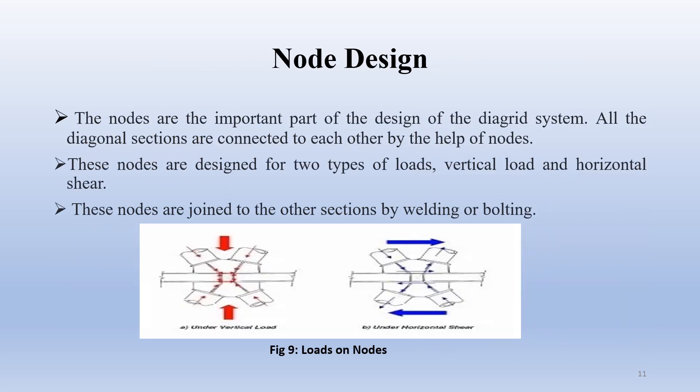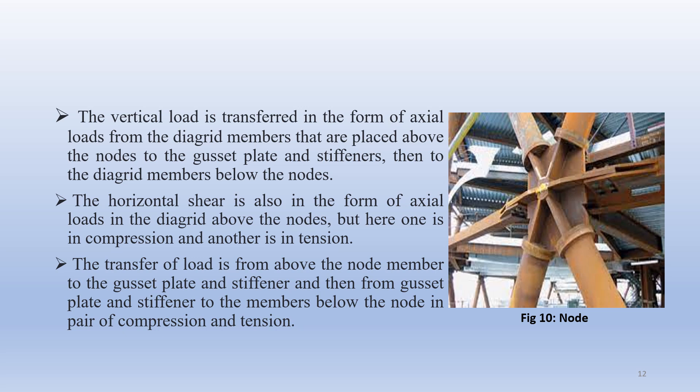Node design. A node is an important component of the diagrid system. All diagonal sections are connected to each other through nodes, and these nodes are joined to other sections by welding or bolting. Nodes are designed for two types of load. The vertical load is transferred in the form of axial loads from the diagonal members above the node to the gusset plate and stiffener, then to the diagonal member below the node. The horizontal shear is also in the form of axial load in the diagonals above the node, where one is in compression and the other in tension. The load is transferred from the member above the node to the gusset plate and stiffener, and then to the member below the node as a pair of compression and tension forces.